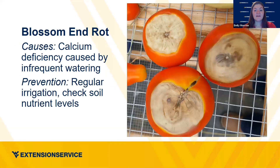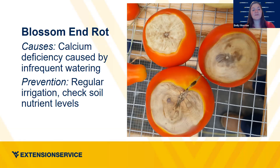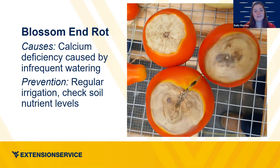Blossom end rot affects tomatoes, peppers, and others within that family. It's actually a calcium deficiency, usually caused by infrequent watering — the plant is not taking up enough calcium from the soil. Sometimes the soil just doesn't have enough calcium, but usually it's because watering is irregular. During periods of heavy drought followed by heavy rain, watering becomes irregular. An old wives' tale says to pour a gallon of milk next to affected plants or put powdered milk in the soil — that gives a calcium boost but doesn't address the underlying watering issue.